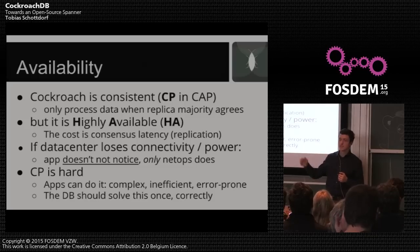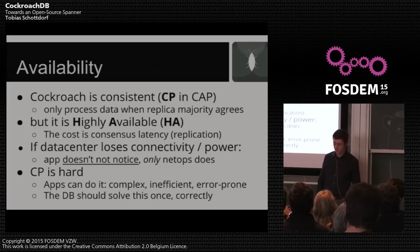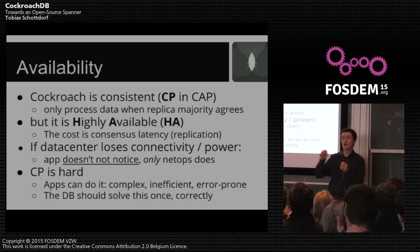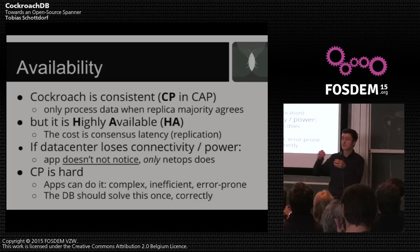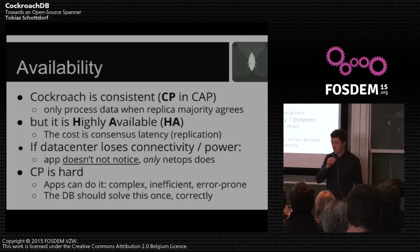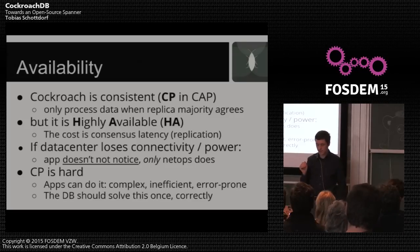CockroachDB is trying to be a CP system in the CAP theorem sense. That means each piece of data you write goes to a bunch of replicas, and being consistent means a server will not respond unless it knows the operation is happening on the majority of replicas. If you have three data centers and two go away, that one data center can't talk to the others and one out of three is not a majority. If only one data center goes down out of three, that doesn't matter because two is a majority — so that's the basic idea.